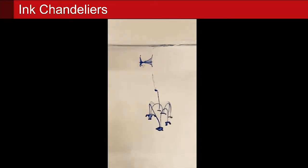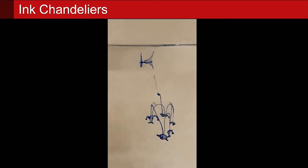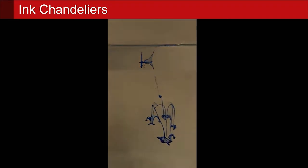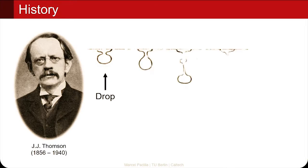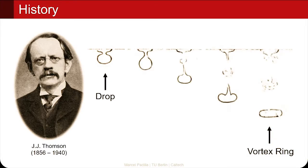These blobs break down into further generations of ink rings, thus forming a so-called ink chandelier. Both these bubble rings and ink chandeliers belong to the vortex filament class and have been studied for a long time — for example, by Thomson, who in 1885 conducted an experiment on ink chandeliers, carefully studying the transition of a drop into a vortex ring.